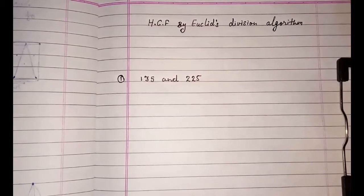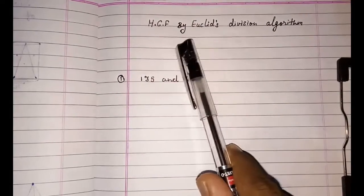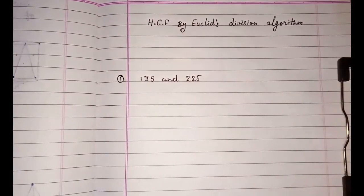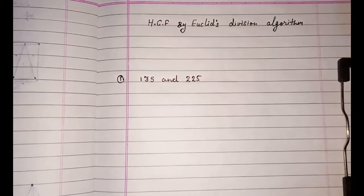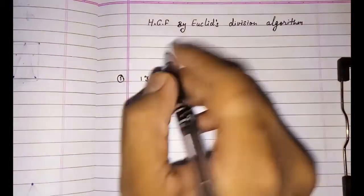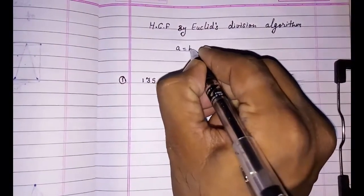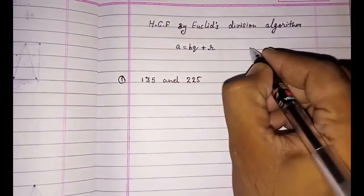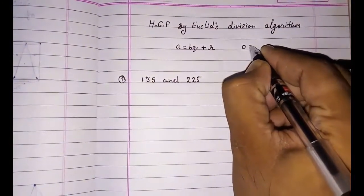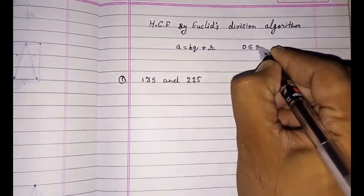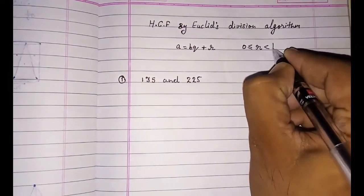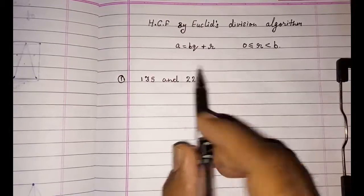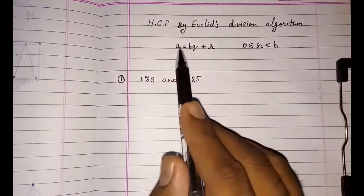Hello friends, today we are going to study about HCF by Euclid's division algorithm. In my previous video, I told you about Euclid's division lemma that is a = bq + r where r is greater than or equal to 0 or less than b. Now we are going to find HCF by that Euclid's division algorithm.